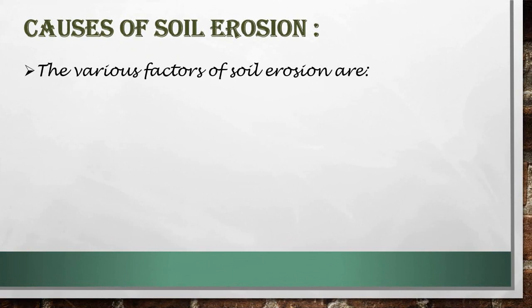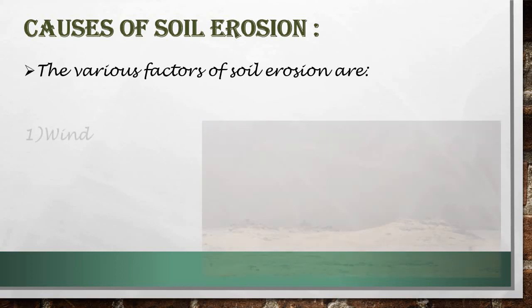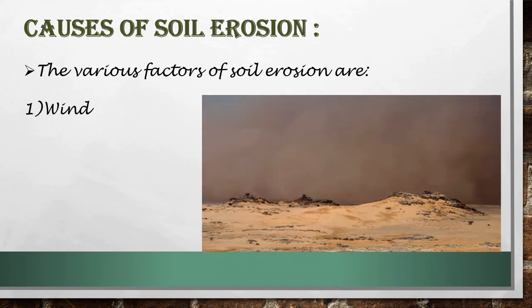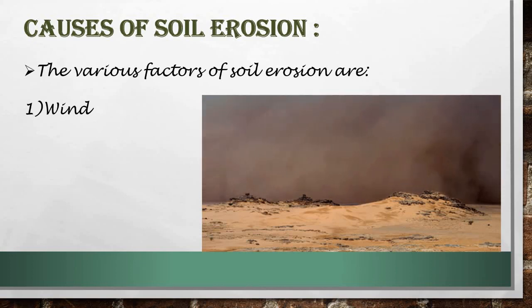Now let us study the different causes or factors which cause soil erosion. Various agents like wind, water, deforestation, and overgrazing by cattle cause soil erosion. The first factor is wind. When strong winds blow, the topsoil along with organic matter is carried away by the wind. This happens more often when the land is not covered with grass or plants. Such conditions are very common in desert and semi-desert regions where strong winds blow very frequently.